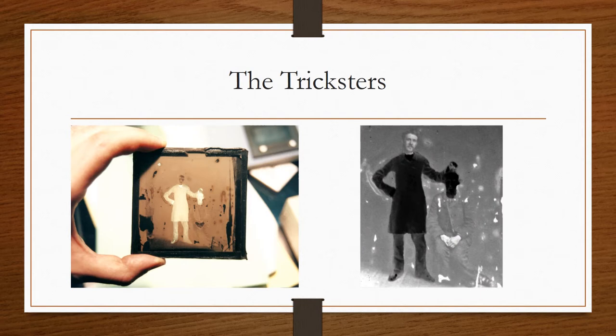So Friese-Greene is the body. And it's quite funny because Rudge looks so serious to see the two of them kind of messing about behind these slides.